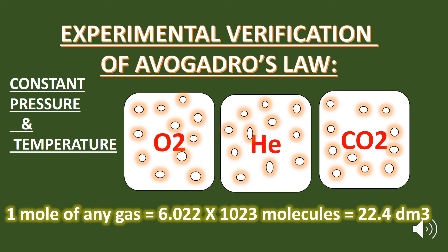Experimental Verification of Avogadro's Law. Avogadro's Law can also be stated as: equal volumes of all gases at the same temperature and pressure contain the same number of molecules. It means that if two or more gases have the same volume, same temperature, and same pressure, then the number of molecules will be the same. Let's take an example of three gases: oxygen, helium, and carbon dioxide, all at constant temperature and pressure with equal moles — one mole each. According to Avogadro's Law, one mole of any gas contains 6.02 × 10²³ molecules.